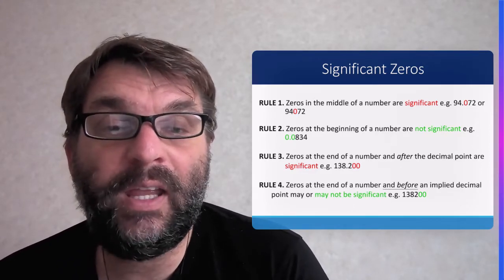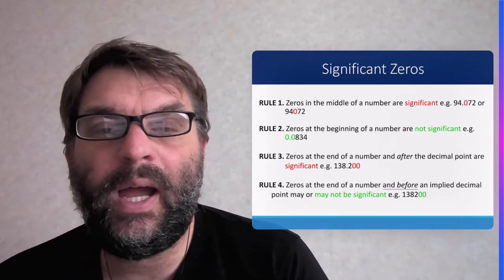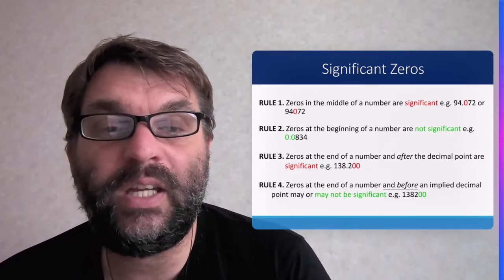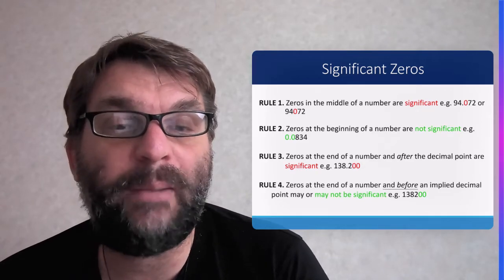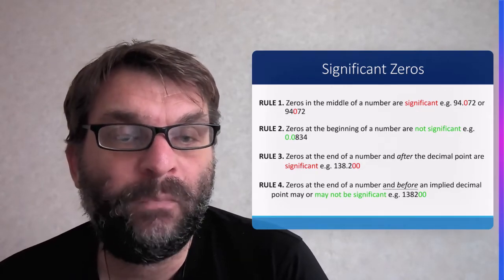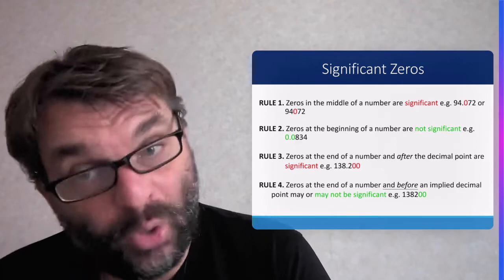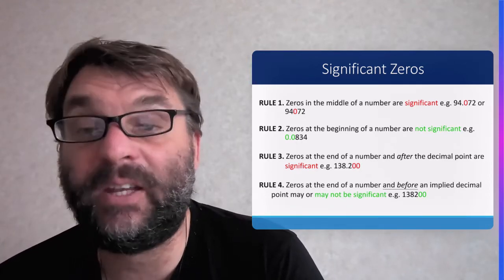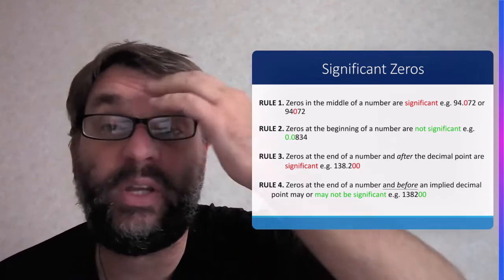And finally, the fourth rule, which is a bit airy-fairy depending on context, is zeros at the end of the number and before an implied decimal point may or may not be significant, and it'll depend on the context.